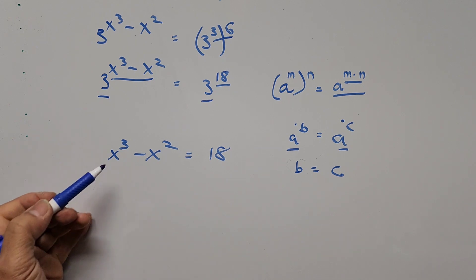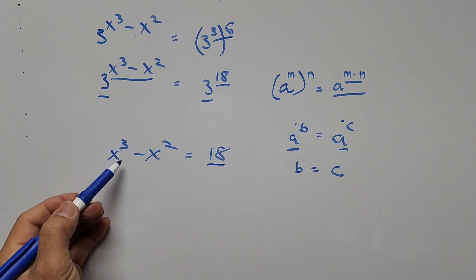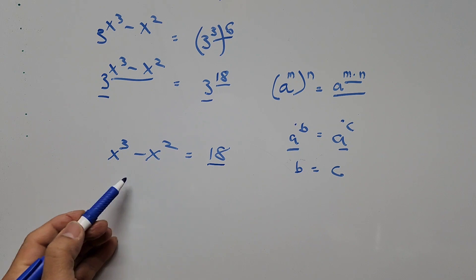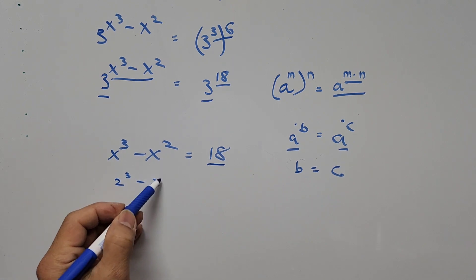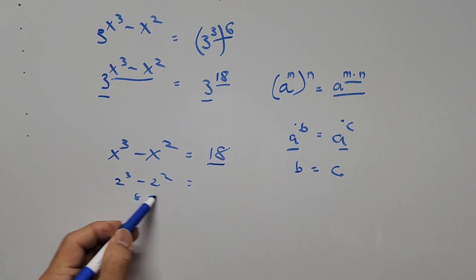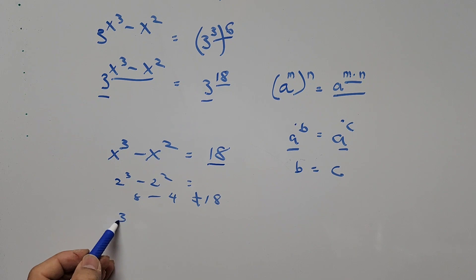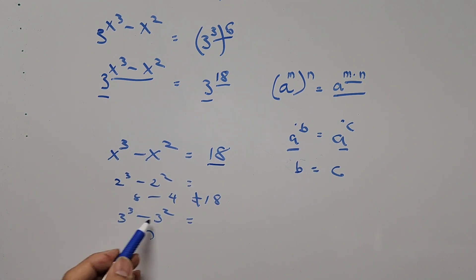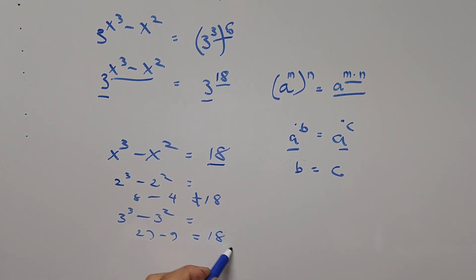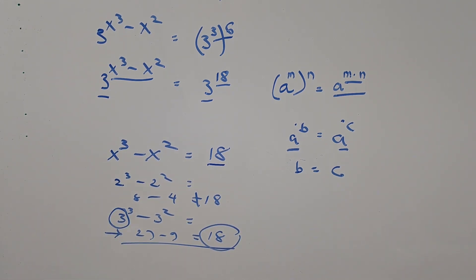If we plug in x equals 1: one cubed minus one squared is 1 minus 1, which is not 18. If x equals 2: two cubed minus two squared is 8 minus 4, which is not 18. If x equals 3: three cubed minus three squared is 27 minus 9, which is exactly 18. So x equals 3 is our first root.